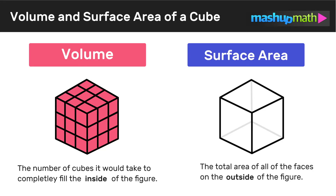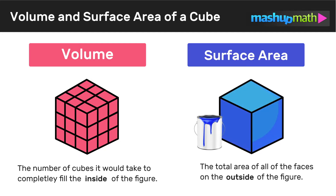The surface area of a cube is the total area of all of the faces on the outside of the figure. So volume refers to the inside, and surface area refers to the outside. We can think of surface area like all of the space we would need to paint on the outside of a cube if we wanted to paint it completely one color.